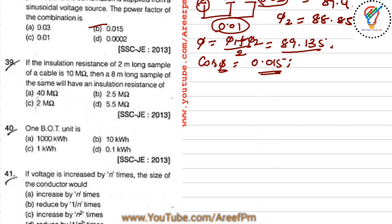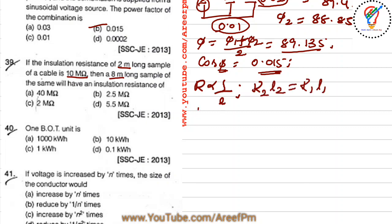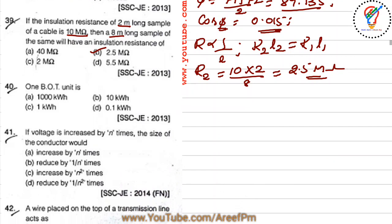Next question: if the insulation resistance of a 2-meter-long sample of cable is 10 mega ohms, what will an 8-meter-long sample of the same cable have? Insulation resistance is inversely proportional to length. So R2 × L2 = R1 × L1, giving R2 = (10 MΩ × 2) / 8 = 2.5 mega ohms. Option B is correct.